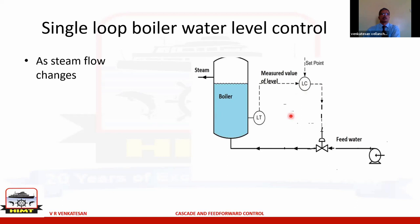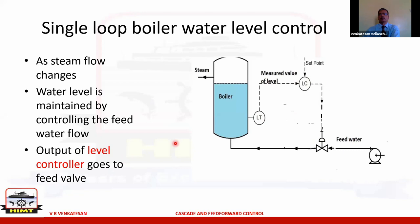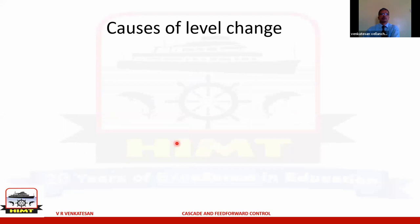The way this works: if steam flow increases, the water level will fall. The drop in water level is detected, compared against the set point, a deviation is produced, and the feed valve is opened or closed accordingly. The output of the level controller goes to the feed valve. This is a simple and very commonly used application, but it has some drawbacks.